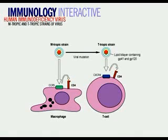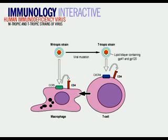HIV enters cells by attaching to CD4 molecules which are present on the cell membrane of target cells. The targets are principally T-helper cells, which express high levels of CD4, and mononuclear phagocytes and dendritic cells, which express lower levels. However, this is not the only factor involved — the virus must also use a coreceptor to get in. It turns out that the coreceptors belong to the class of cell surface receptors for chemokines, a group of cytokines involved in cell migration and activation.